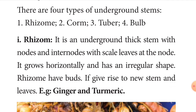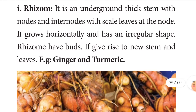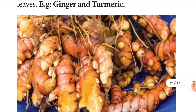First is rhizome — an underground thick stem with nodes and internodes with scale leaves at the nodes. It grows horizontally and has an irregular shape. Rhizome has buds which give rise to new stems and leaves. Examples are ginger and turmeric.